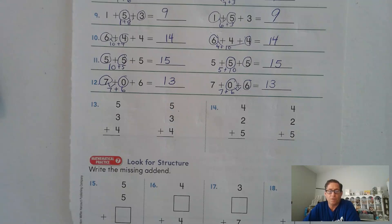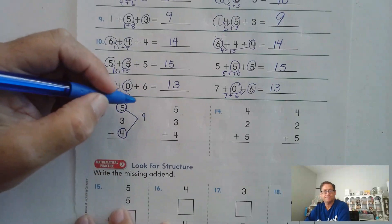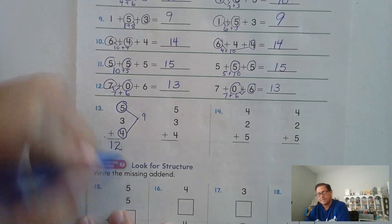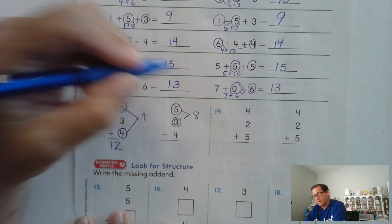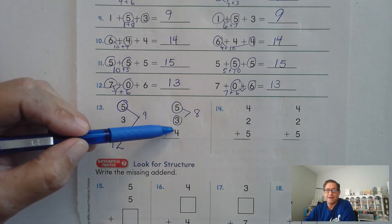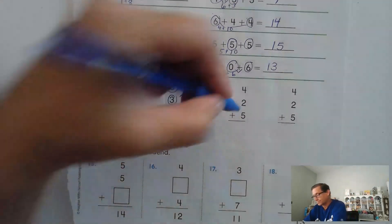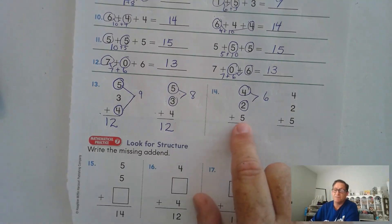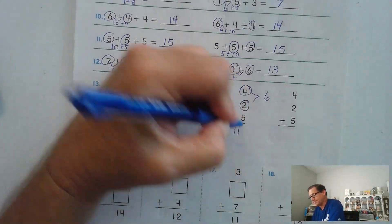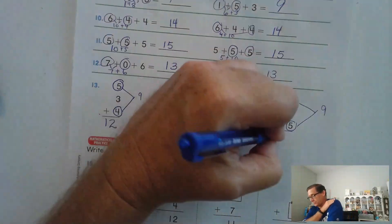Five plus three plus four. Maybe I'm going to combine the five and the four to make nine, and nine plus three is twelve. I could also combine the five and the three to get eight, and eight plus four: eight, nine, ten, eleven, twelve. Four plus two plus five: if we start with four and two, that gives me six, and six plus five — five plus five is ten plus one more is eleven. Or maybe I combine the four and the five to get nine, and nine plus two is eleven.